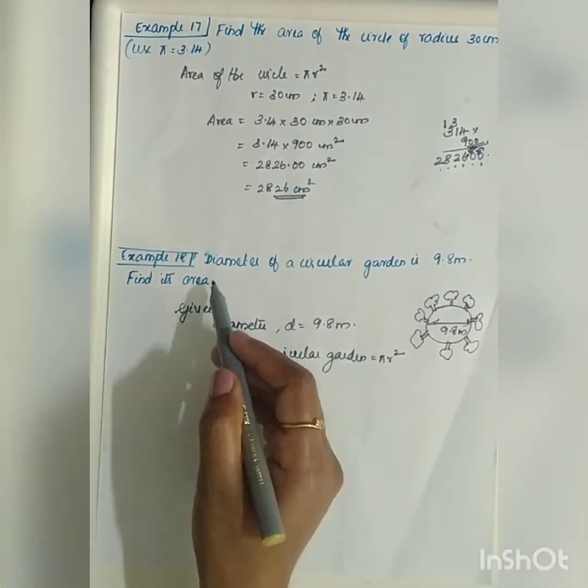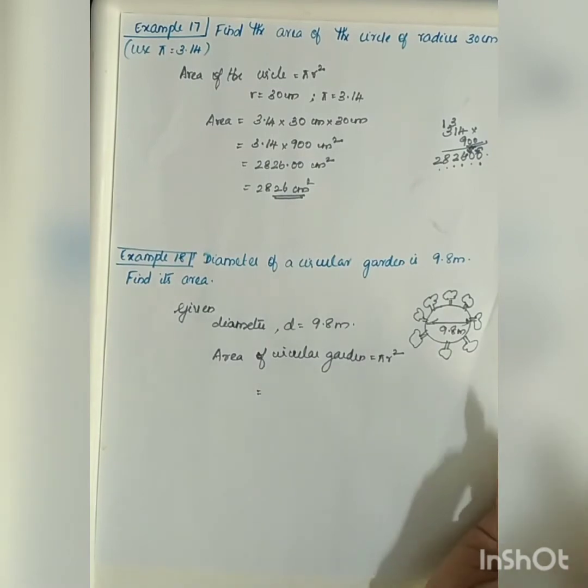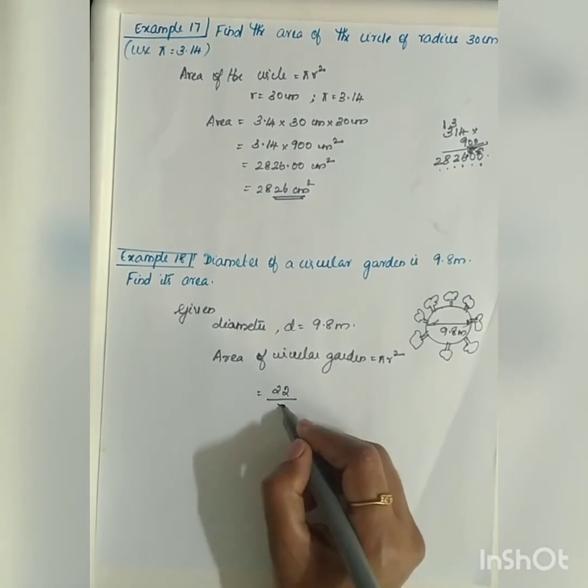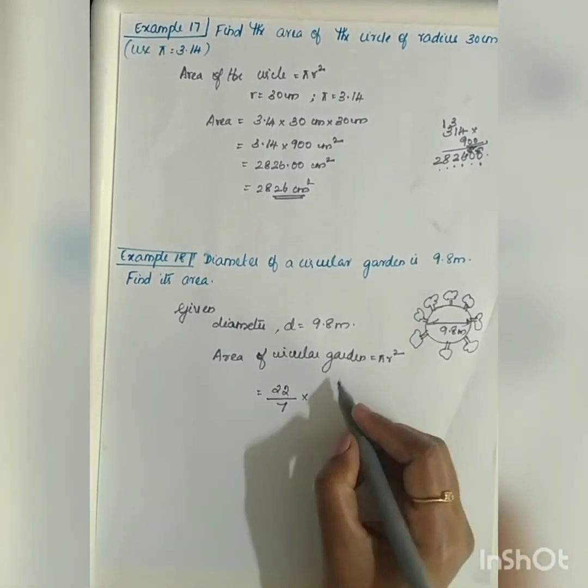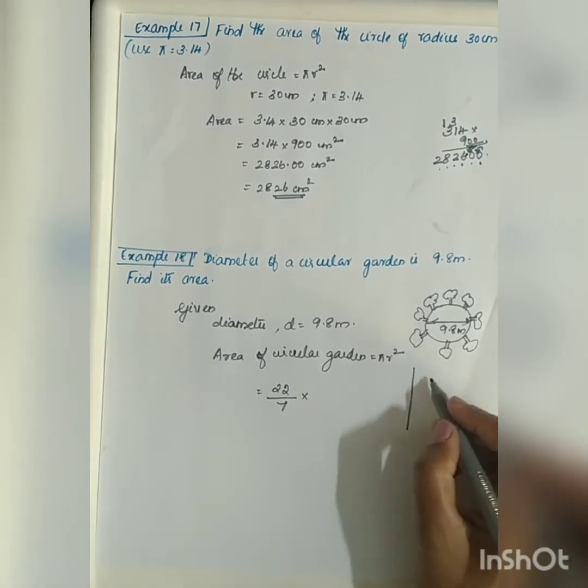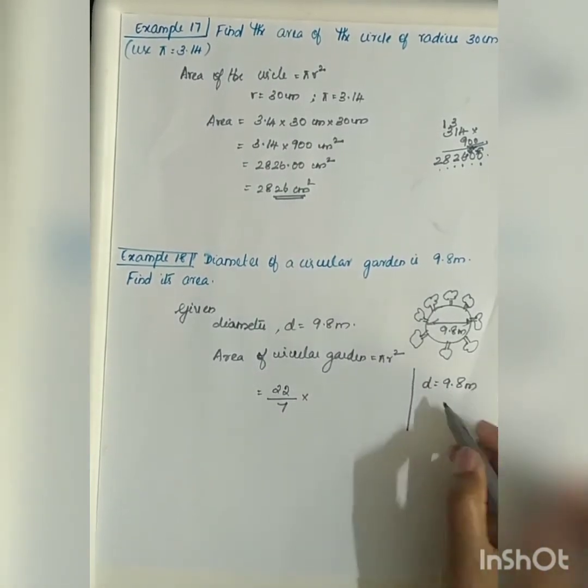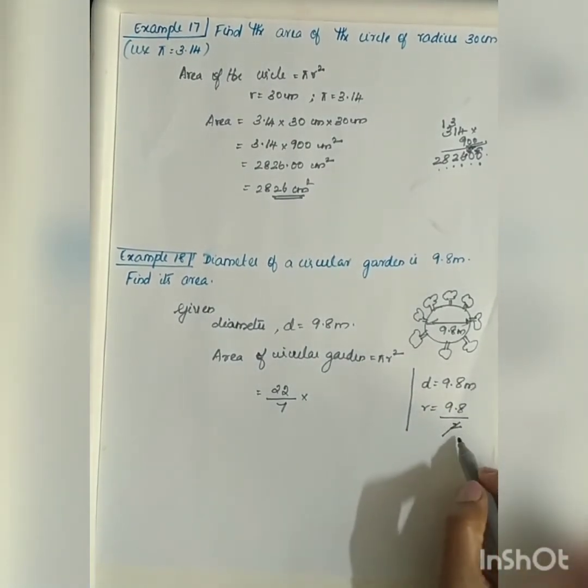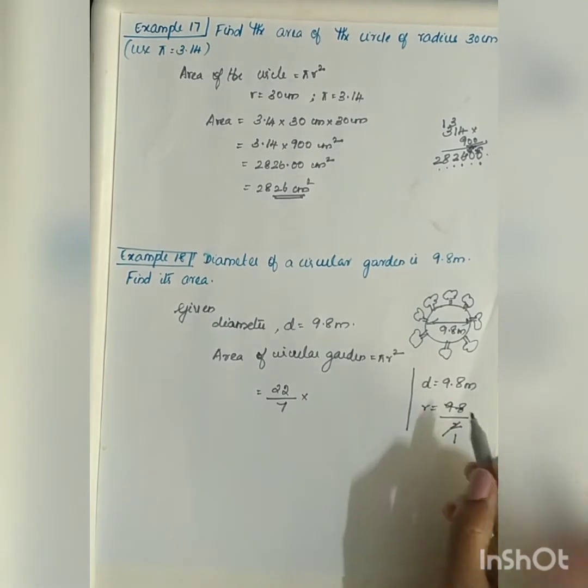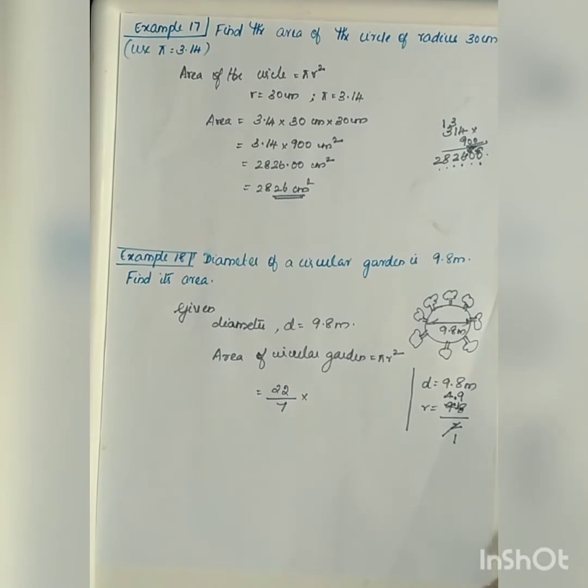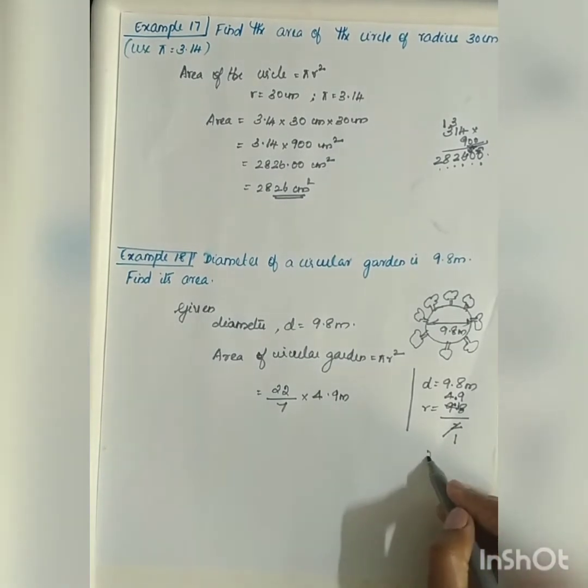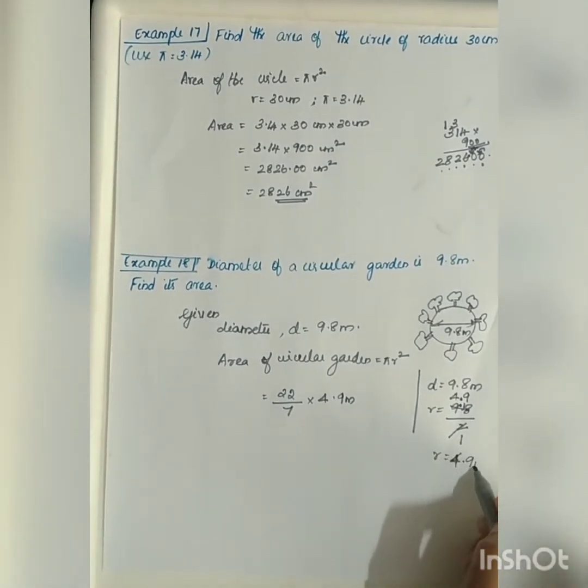We will take, there is no data given, so we can take either 22/7 or 3.14. I am going to proceed with 22/7 into r square. We don't know r. d is given 9.8 meter. So what will be r? 9.8 divided by 2. Let me do cancellation. 1, 2 is 2, 4 twos are 8, we get balance 1, 9 twos are 18. The value will be equal to 4.9 meter. R is equal to 4.9 meter.